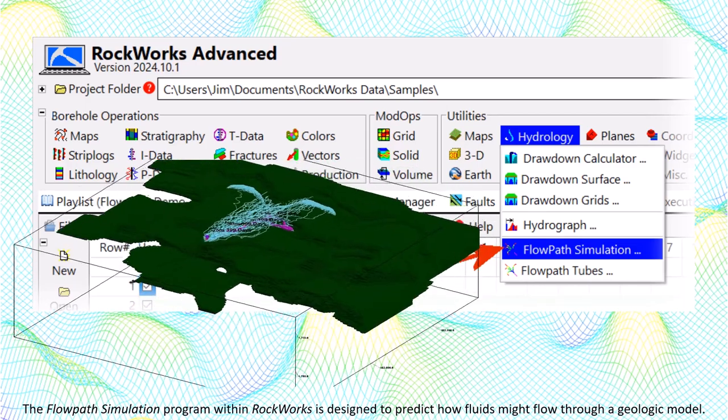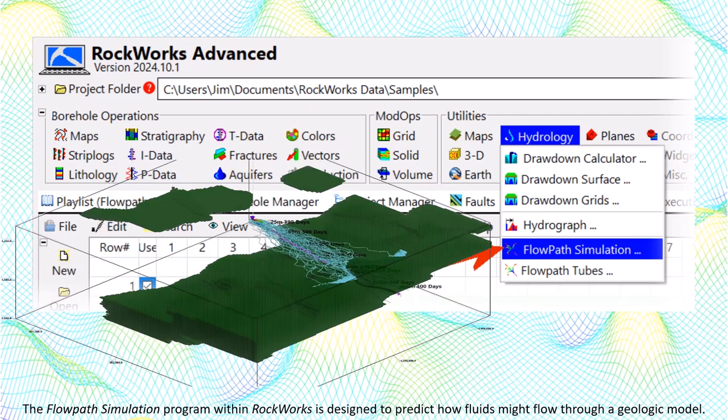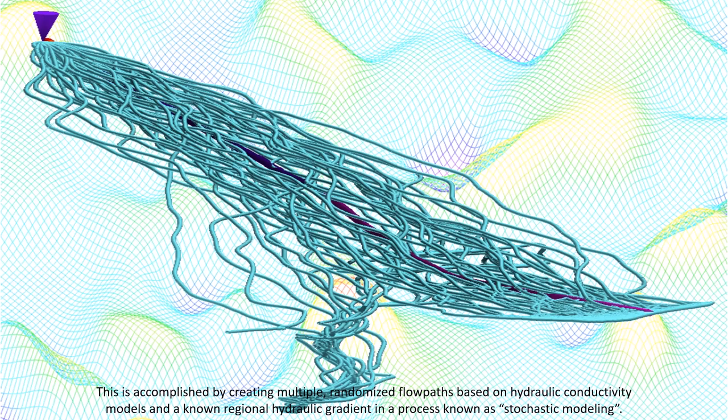The flow path simulation program within RockWorks is designed to predict how fluids might flow through a geologic model. This is accomplished by creating multiple randomized flow paths based on hydraulic conductivity models and a known regional hydraulic gradient, in a process known as stochastic modeling.